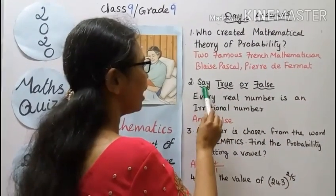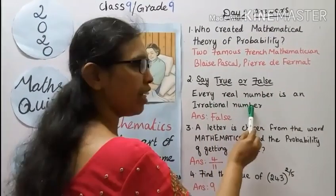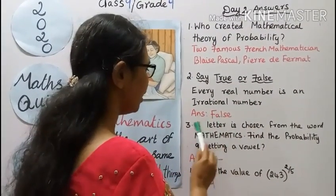Second question, say true or false. Every real number is an irrational number. Answer: false.